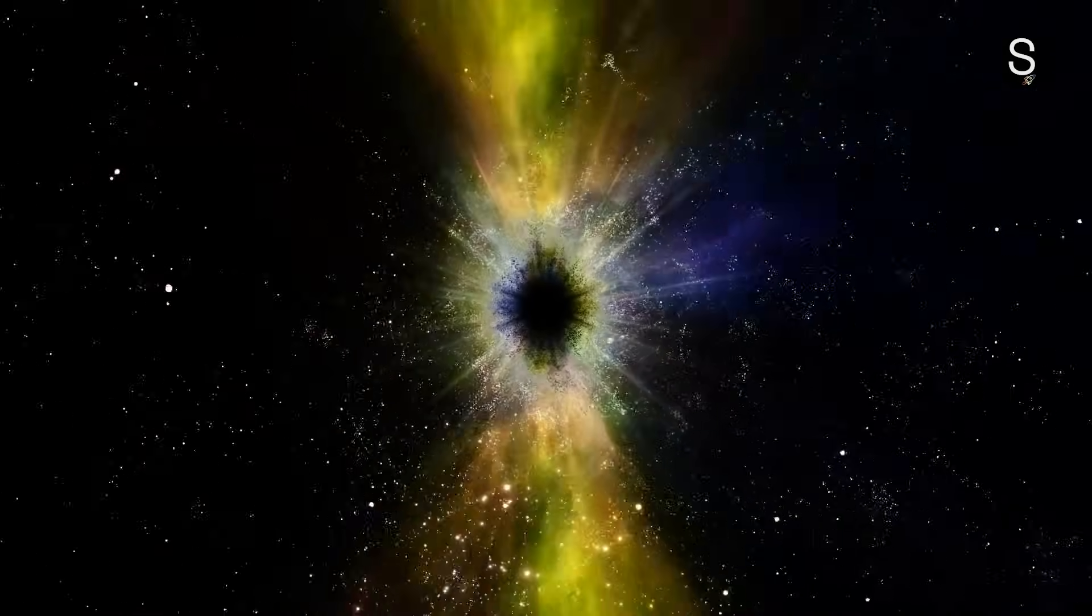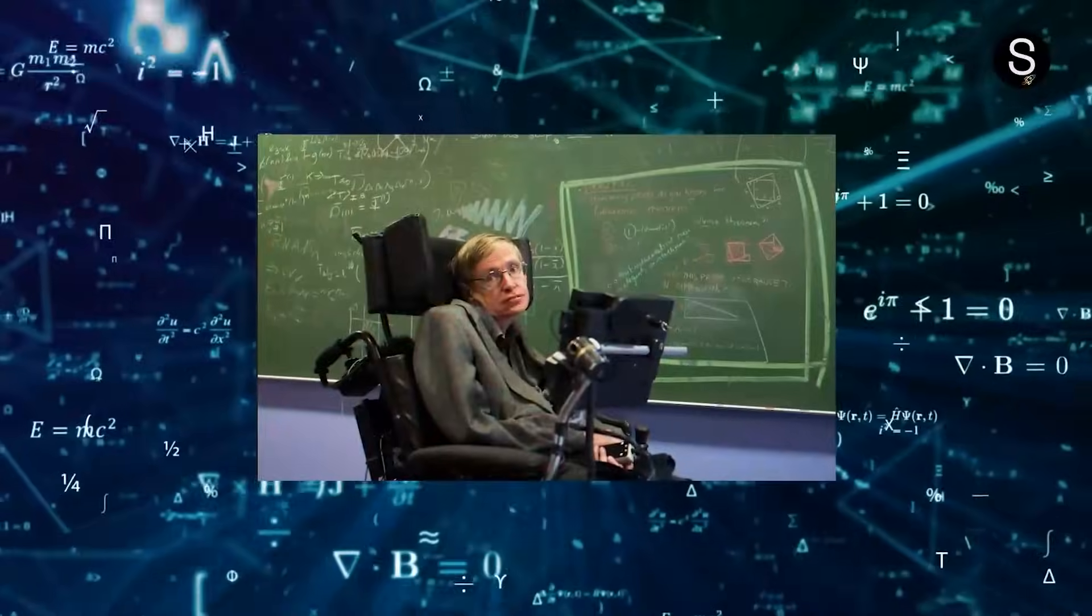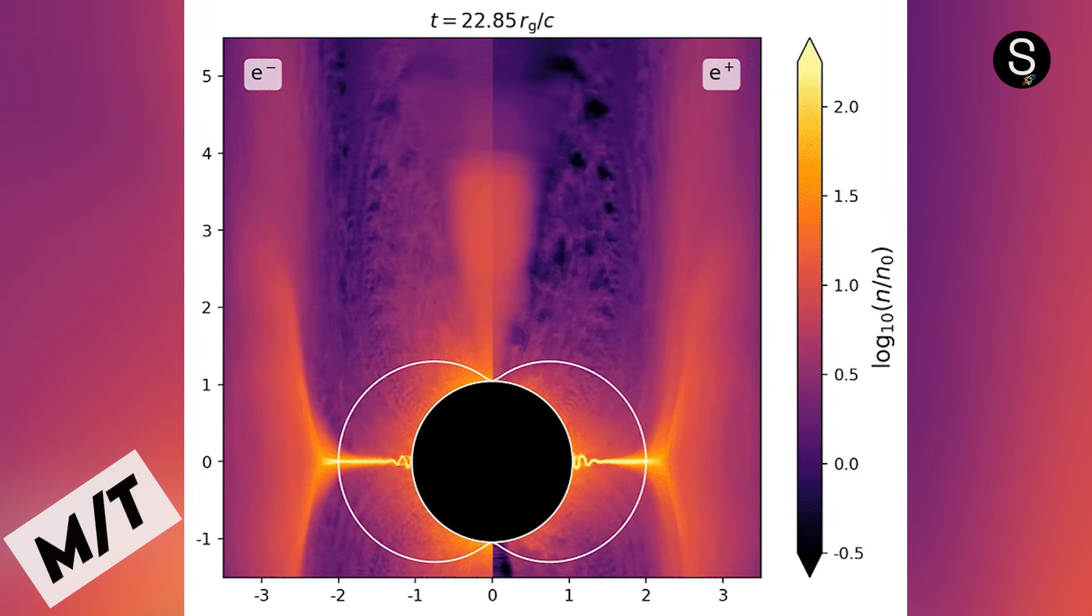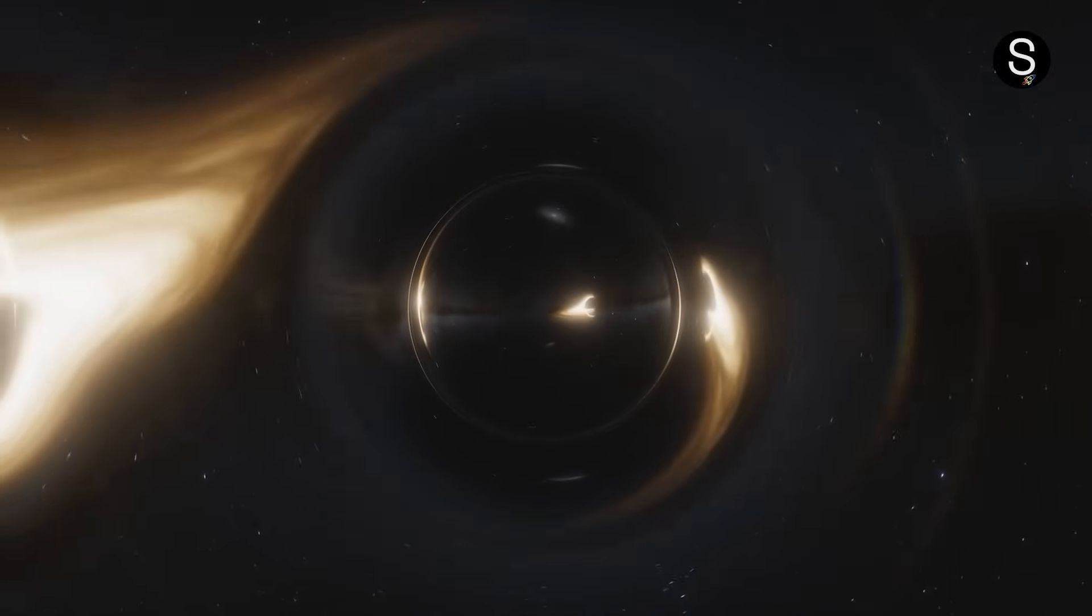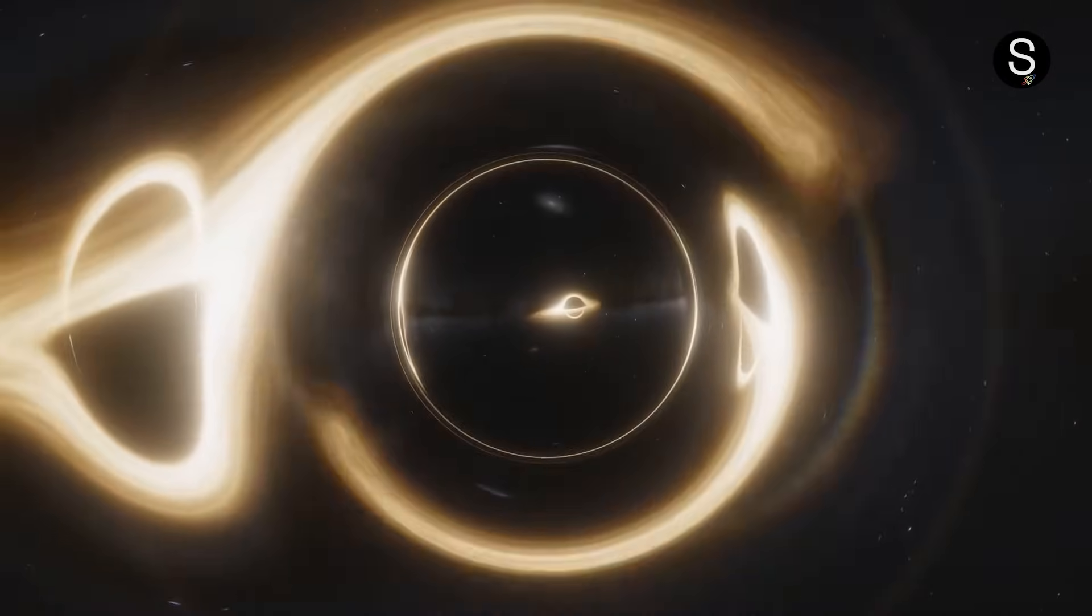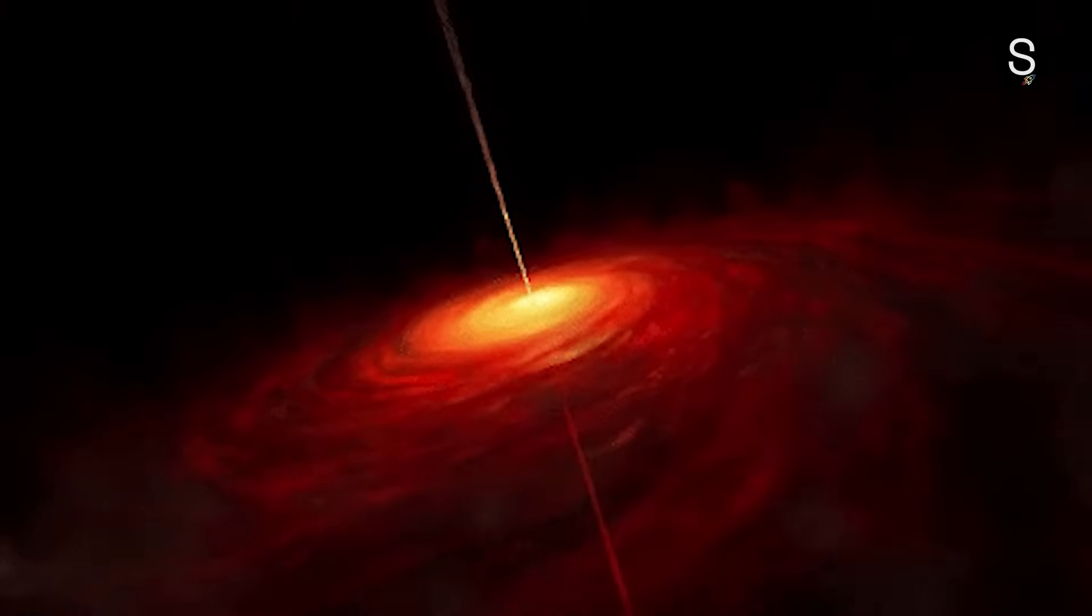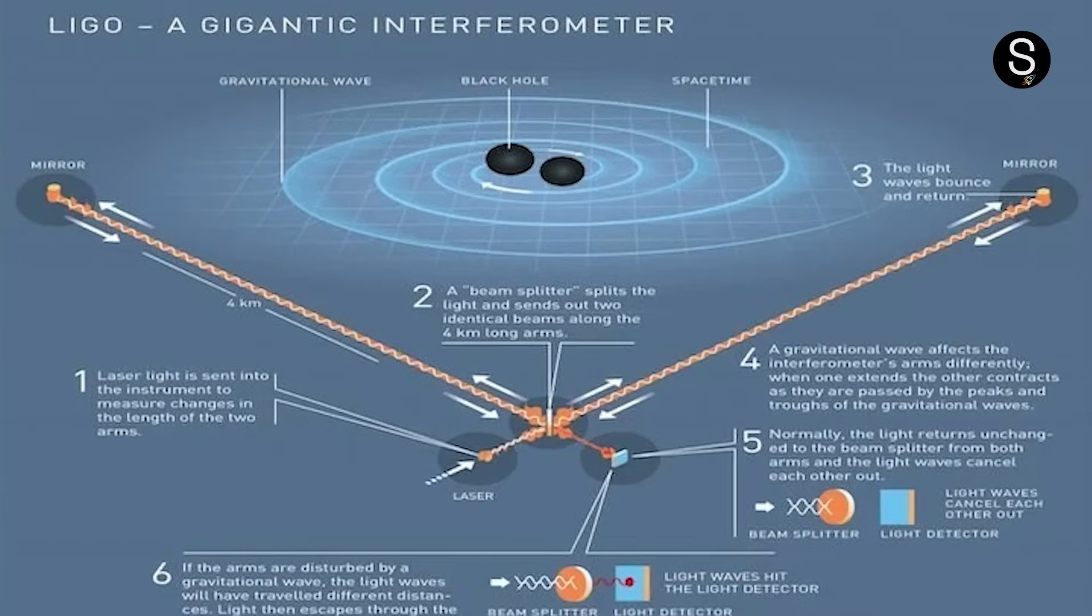Contrary to popular belief, black holes do not exist indefinitely. Stephen Hawking's Hawking radiation hypothesis suggests that black holes lose mass over time as they emit radiation. The black hole will eventually collapse. Black holes have the capacity to merge, creating even larger black holes. When this occurs, the resulting black hole emits a burst of gravitational waves, which advanced instruments like LIGO can detect.